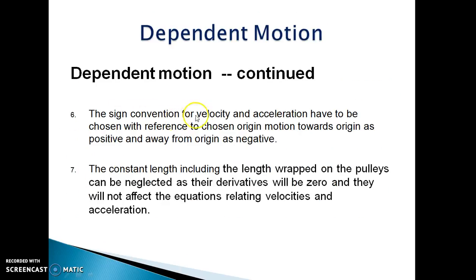The sign convention for velocity and acceleration have to be chosen with reference to chosen origin. Motion toward origin is taken as positive and away from origin is taken as negative. The constant length including length wrapped around pulleys can be neglected as their derivative will be zero, and they will not affect the equations relating velocities and acceleration.